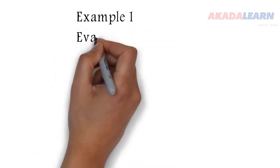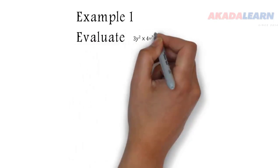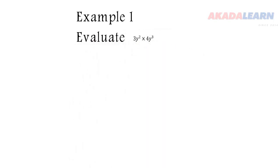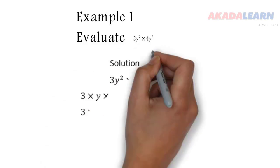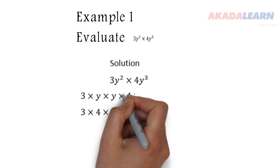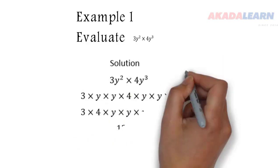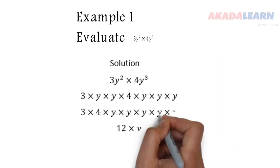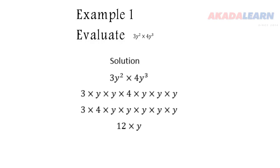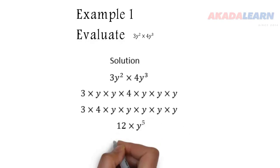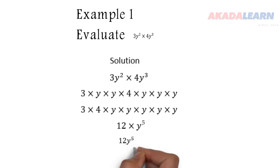Let's see the first example. Evaluate 3Y raised to power 2 times 4Y raised to power 3. So we say equal to 3 times Y times Y, which is Y raised to power 2, then 4 times Y times Y times Y, which is Y raised to power 3. So 3 times 4 is 12. Y is multiplying itself 5 times, so we get Y raised to the power of 5. And when we multiply 12 and Y raised to power 5, we get 12Y raised to power 5.